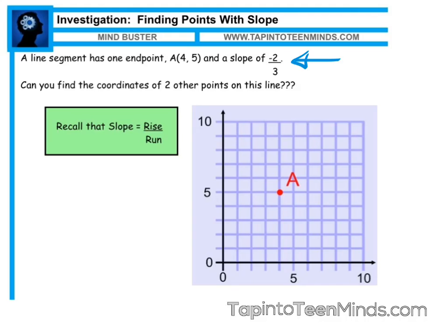We also note the rise is negative 2, and our run is positive 3. So knowing that, if I have a rise of negative 2 and a run of positive 3, that will allow me to find some other points on this line. So if I start at point A,